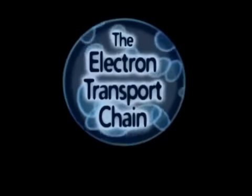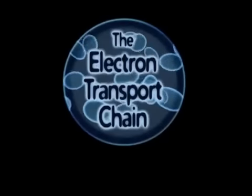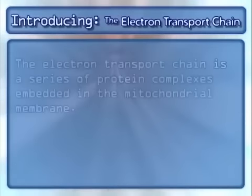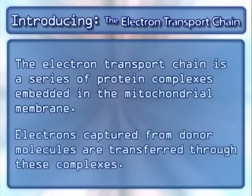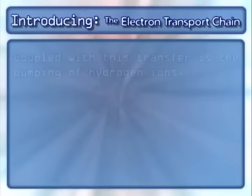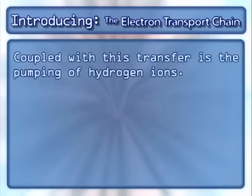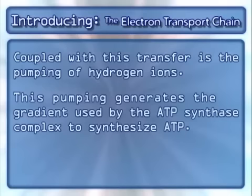This is a video of the electron transport chain of aerobic respiration. The electron transport chain is found in the inner mitochondrial membrane, and it is a whole bunch of protein complexes embedded in this membrane. It captures electrons from donor molecules made in the Krebs cycle and glycolysis, and pumps hydrogen ions into the membrane space in order to use chemiosmosis to make ATP.